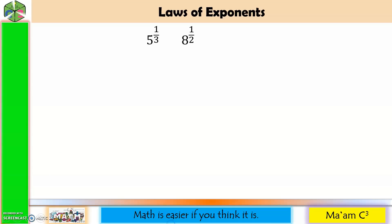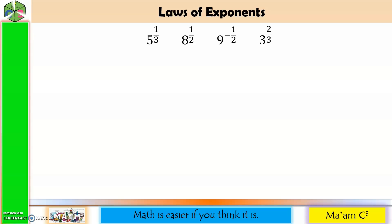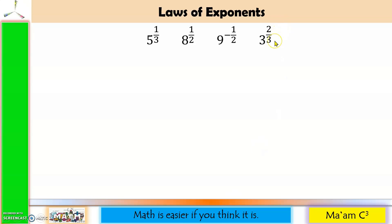Look at the following expressions. What do you notice with their exponents? One-third, one-half, negative one-half, two-thirds. These are called rational numbers. Rational numbers are numbers that can be expressed as a quotient of two integers, commonly known as fractions.